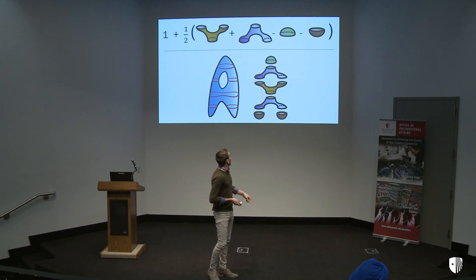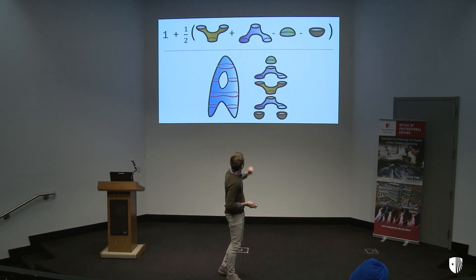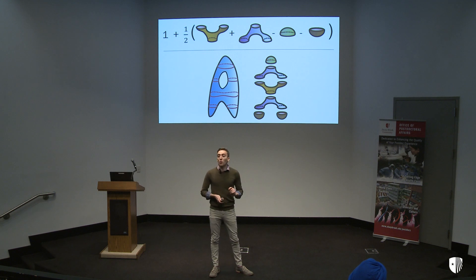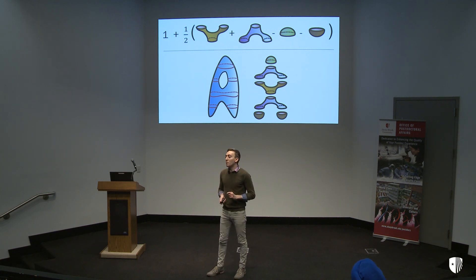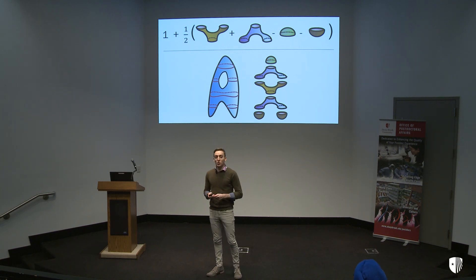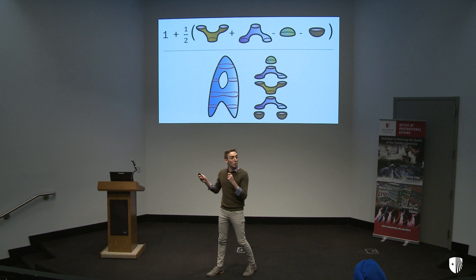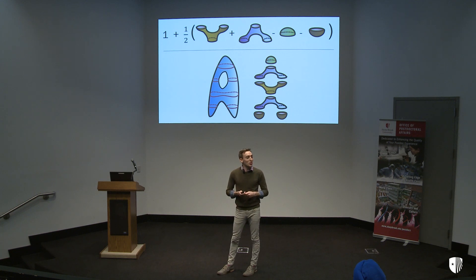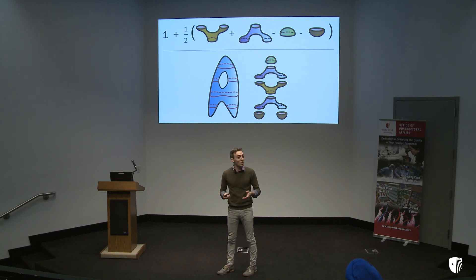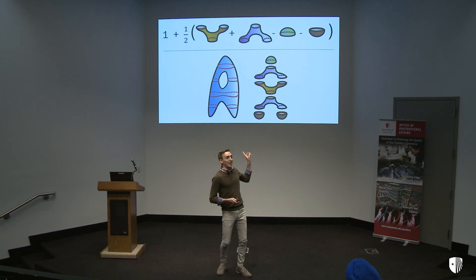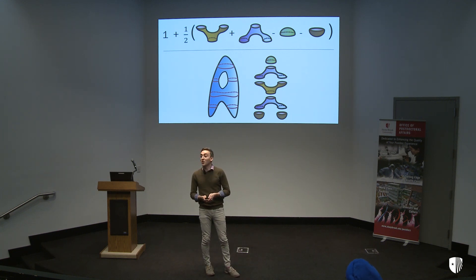So in our example, we see there's one orange piece plus two purple pieces minus one green piece minus two brown pieces. So the quantity in parentheses is one plus two minus one minus two, which is zero. And that extra one tells me that I have one hole.